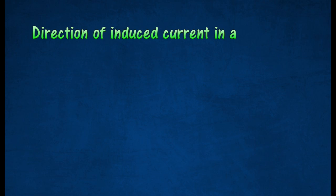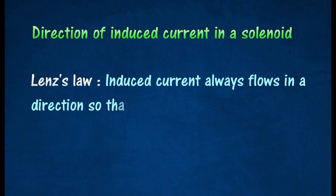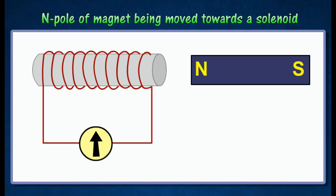The direction of the induced current in a solenoid can be worked out using Lenz's law. According to Lenz's law, the direction of the induced current in a solenoid is such that its magnetic effect always opposes the change producing it.